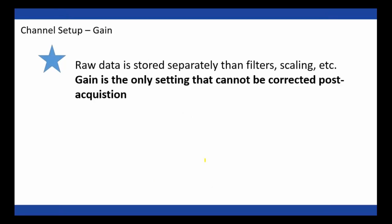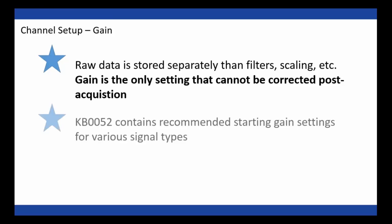Raw data is stored separately in our data files from filtering, scaling, and other processing. But gain cannot be corrected post-acquisition because it's a hardware setting affecting how data is collected in the first place, so always make sure you get this right. We have a knowledge base article on our support site containing recommended starting gain settings for common signal types collected in Biolab — please check that out when setting up a system. For the Mindware Mobile, gain works a little differently and you can typically leave it at 1 for most signals.